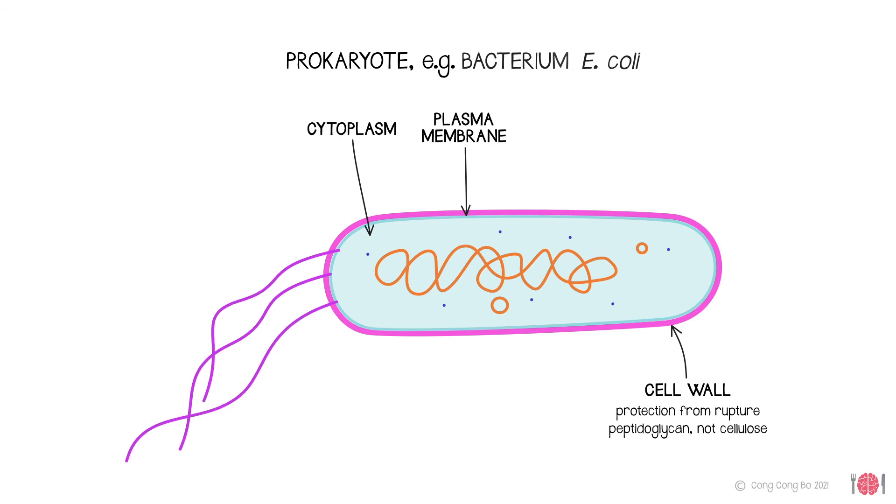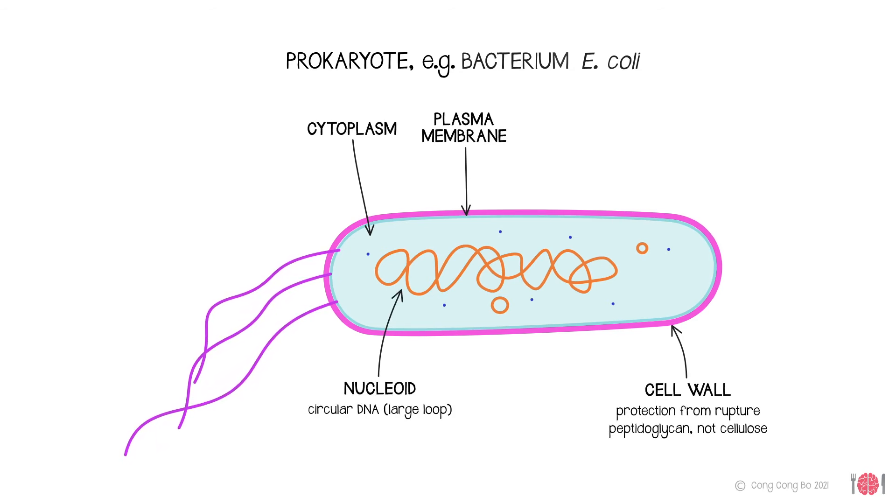Instead of chromosomes contained in the nucleus, prokaryotes have circular DNA in a nucleoid, a nucleus-like region, which forms a single loop in the cytoplasm, only millimetres in circumference.